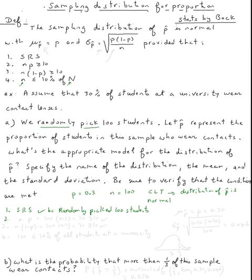For condition two, n times p equals what? n is one hundred times p is zero point three, which equals thirty, which is bigger or equal than ten, so that's okay.